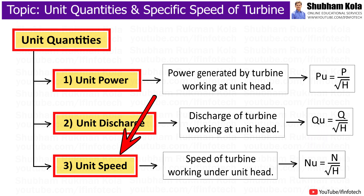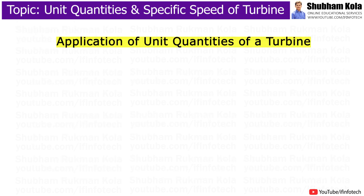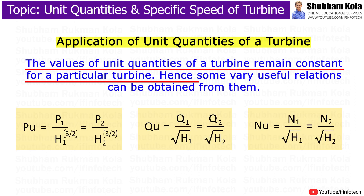Unit speed of a turbine is the speed of the turbine working under unit head, where N is the speed of the turbine at a given head. The value of unit quantities of a turbine remains constant for a particular turbine. Hence, some very useful relations can be obtained from them.